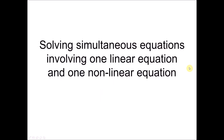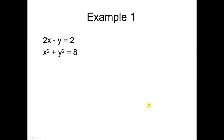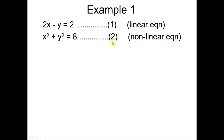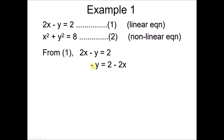Now let's solve simultaneous equations involving these two types. In Example 1, the first thing we always do is label both equations as equation 1 and equation 2 — noting which is linear and which is nonlinear. We take the linear equation and make one of the variables the subject. Taking y as the subject, we move x to the other side to get y equals 2x minus 2, and label this as equation 3.